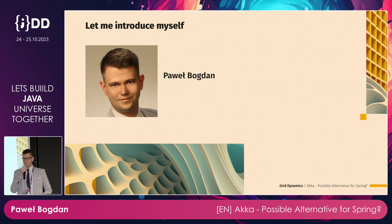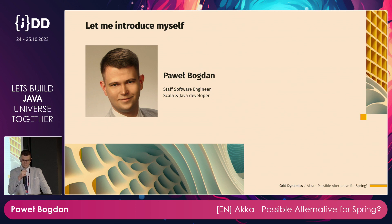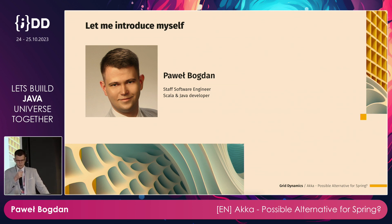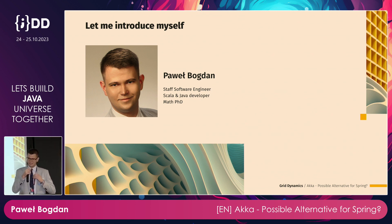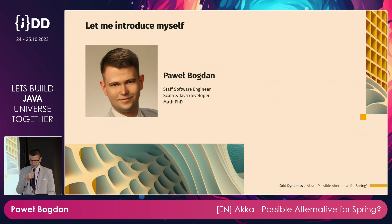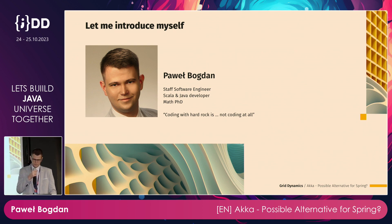My name is Pavel Bogdan and I work as a staff software engineer at Grid Dynamics. I'm a programmer in Scala and Java. I have many years of experience in Java development, but since I joined Grid Dynamics I've started programming in Scala and I really like it. One funny fact: I earned a PhD in Mathematics. And another funny fact: I like listening to hard rock during coding because without it, coding doesn't go that well.